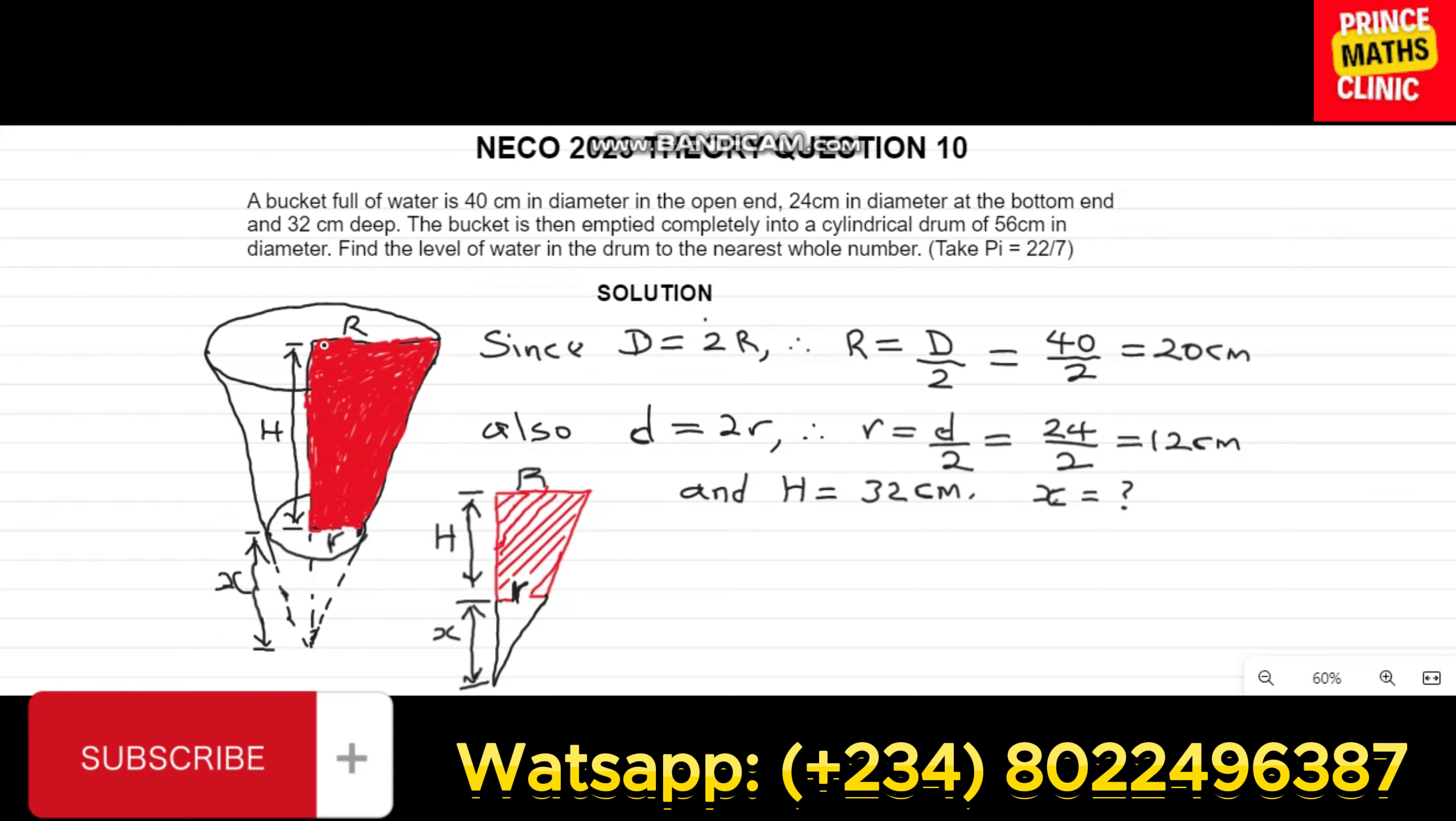Therefore, half of the diameter is called a radius. We will see that later on in the formulas. And 24 cm in diameter at the bottom end, that is this tail end here. It's 24 cm in length. So half of it will be the radius. And 32 cm deep. That is this height.